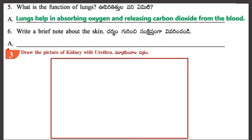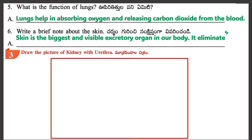Question 6: Write a Brief Note about the Skin. Answer: Skin is the biggest and visible Excretory Organ in our body. It eliminates excess water and salts from the body in the form of sweat.